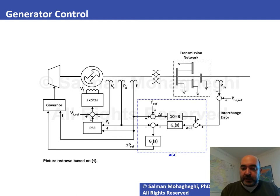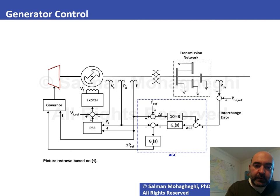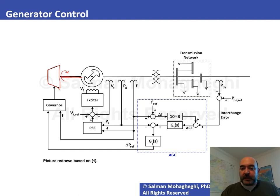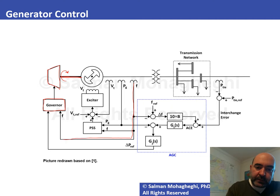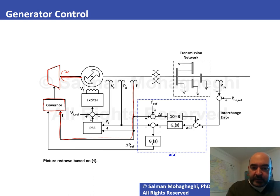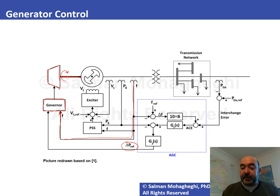This is how the controllers of a generator look and relate to one another. The turbine is the prime mover, mounted on the same shaft as the rotor. By rotating the turbine, we rotate the generator rotor and generate voltage at a particular frequency. The governor system monitors frequency at the terminals and adjusts the prime mover's rotational speed based on whether frequency is high or low. It also receives Δ P_ref — changes to the active power set point — from the AGC system.